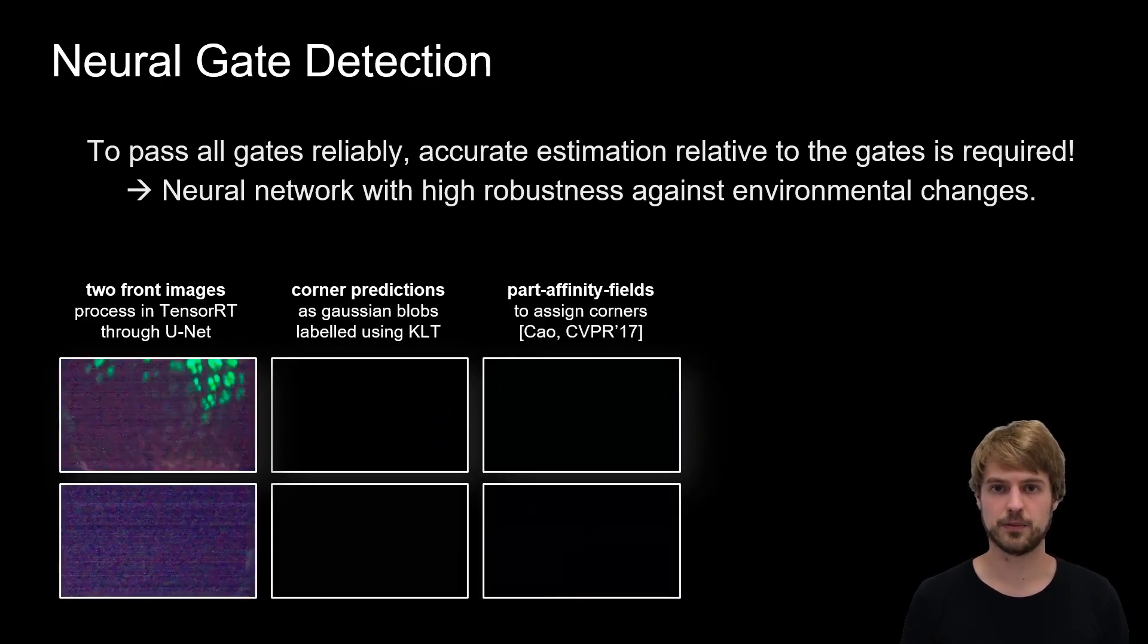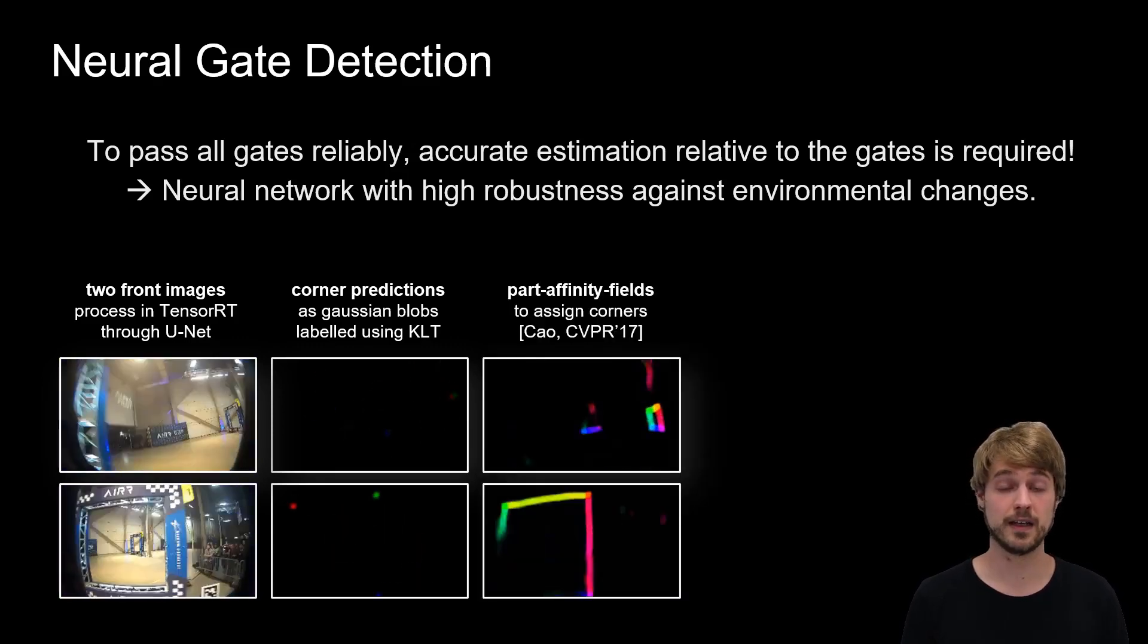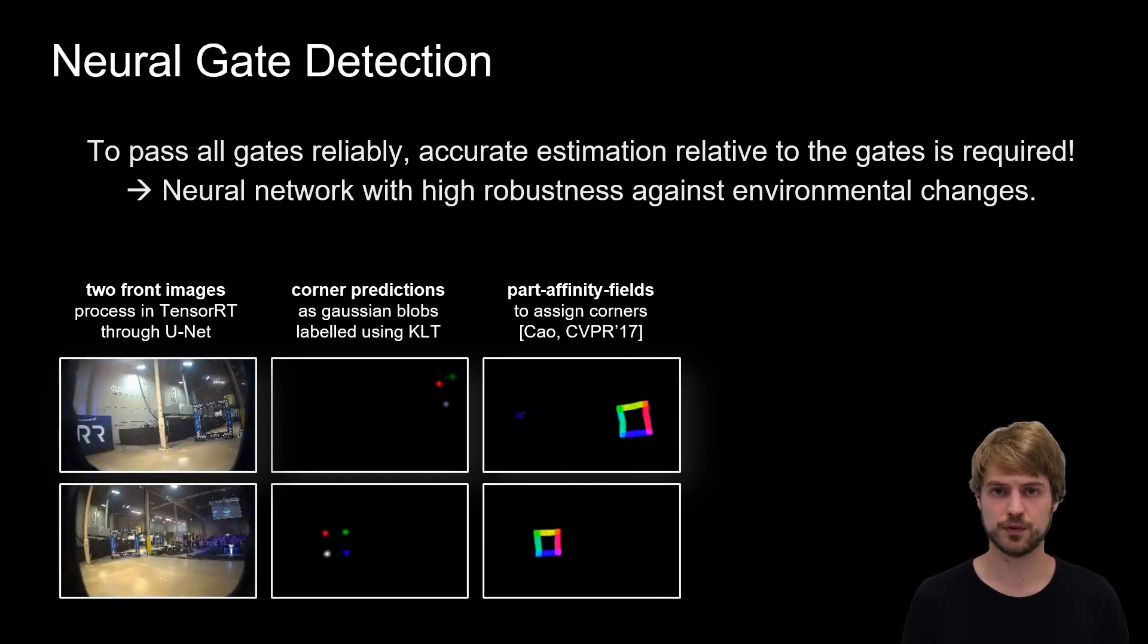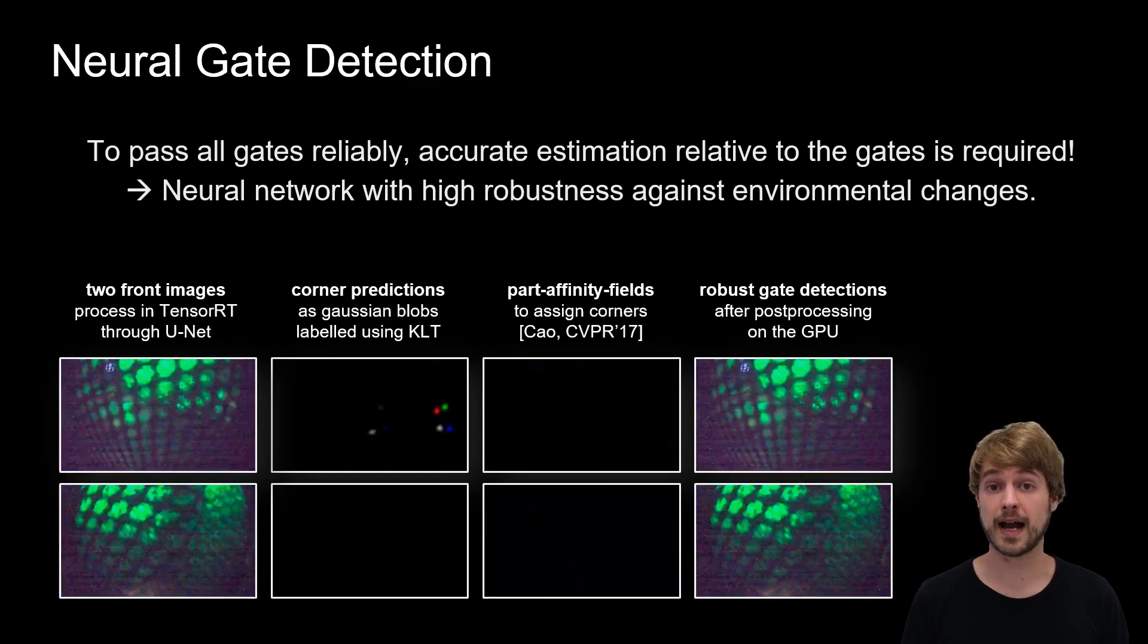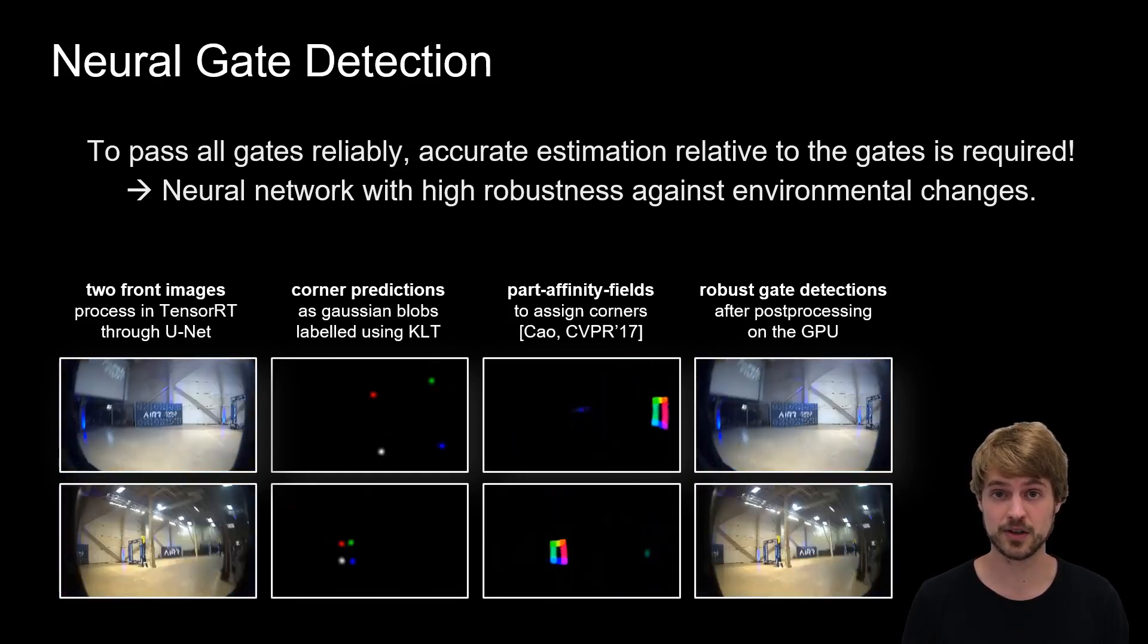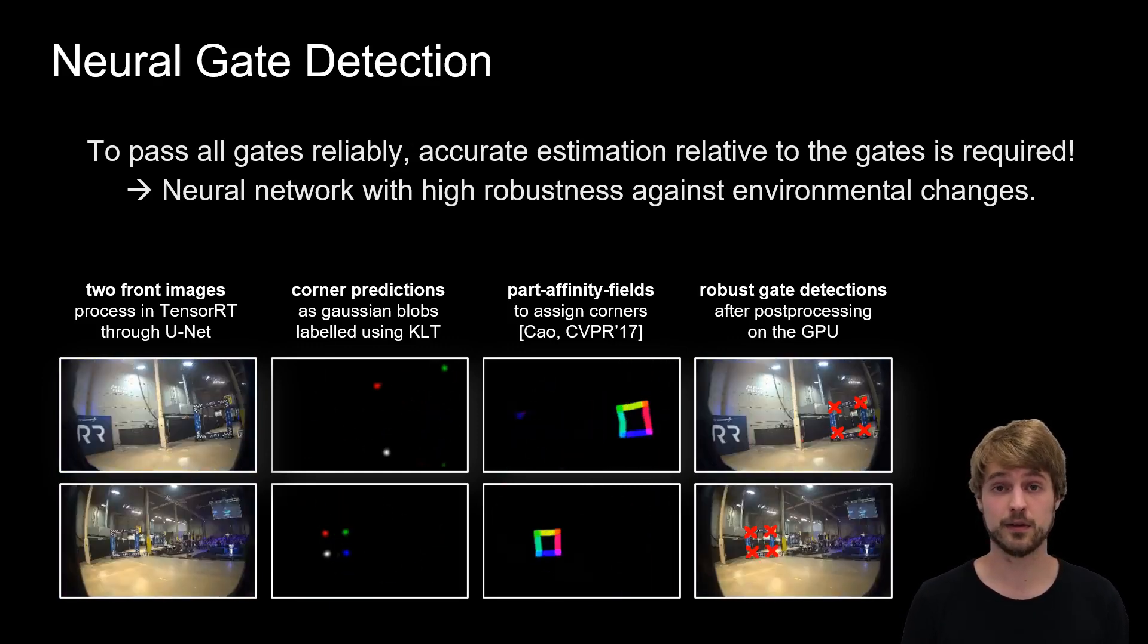In addition to that, we predict the part affinity field, which allows us to assemble the individual gate corners to full gate detections. These gate detections are highly robust against environmental changes and even difficult lightning conditions.